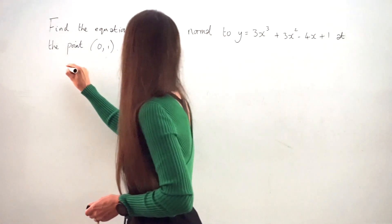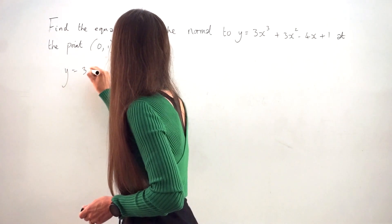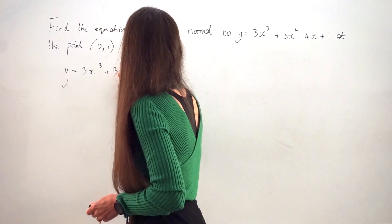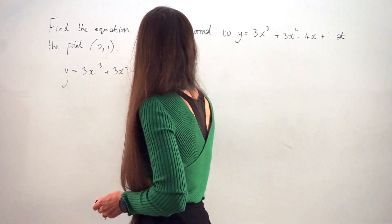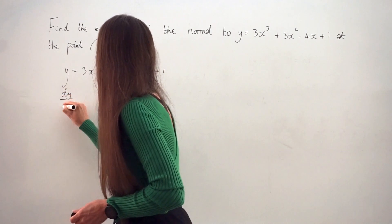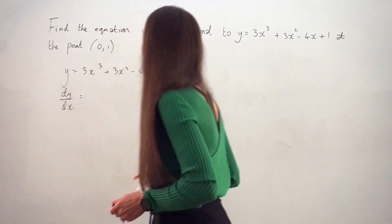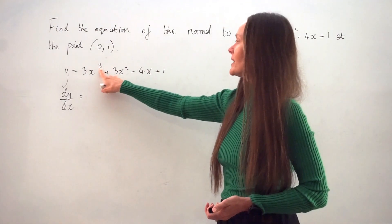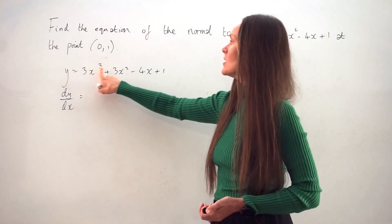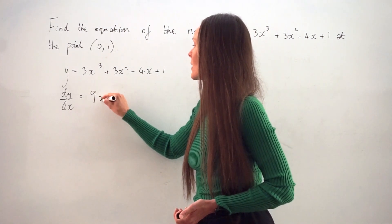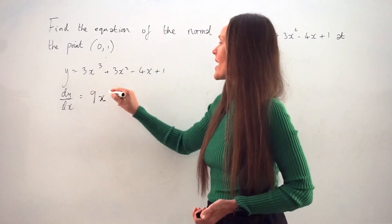So I'm going to start by just writing out the equation of the curve again. So y = 3x³ + 3x² - 4x + 1. And I'm going to find the derivative of this equation, dy/dx. So remember when you differentiate, you have to take this power here and multiply by this number. So 3 times 3 is 9 and the power always decreases by 1. So this will become x².